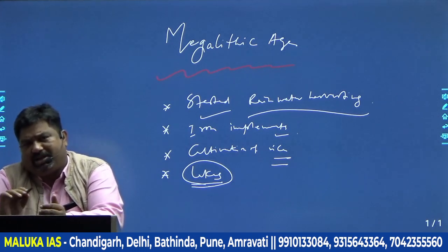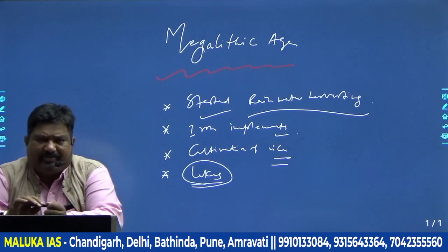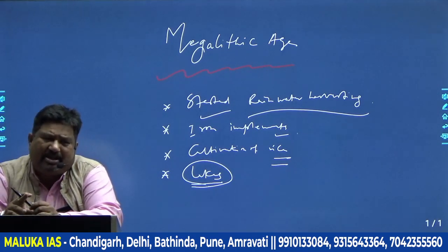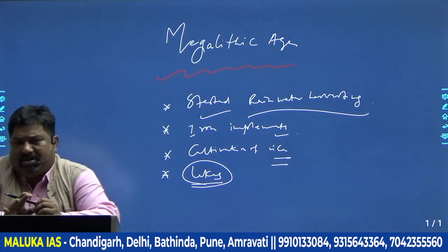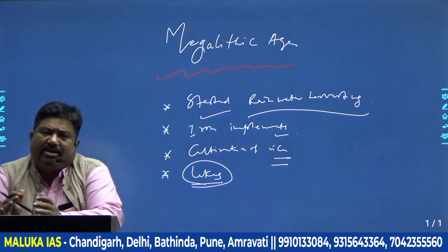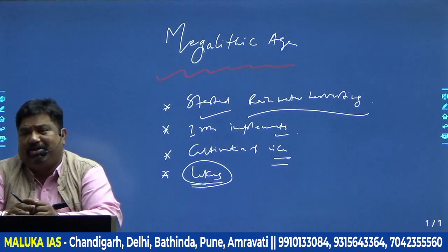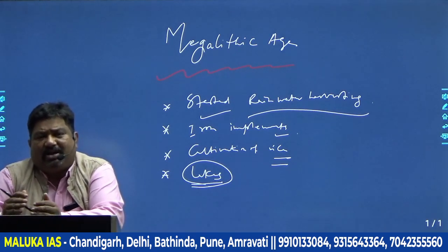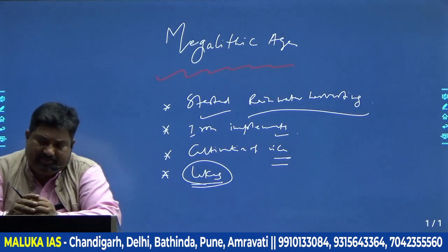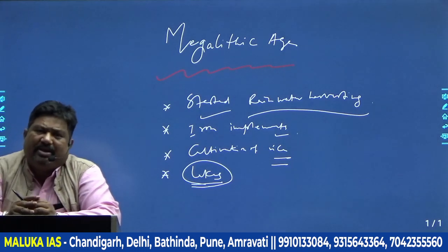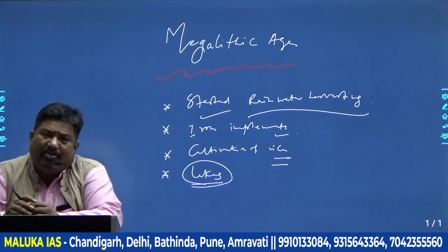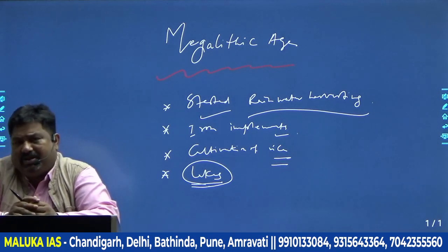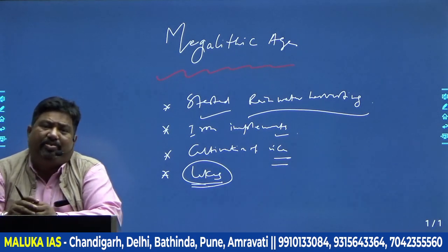Dolmens were not placed in agricultural areas, which is why they are still remaining in existence. Many people think these dolmens were the meditation places of monks because the structure is table-shaped. These features show that megalithic people were neither contemporaneous nor uniform in their civilizational story. Today some sites have been recovered from North India and Kashmir as well, so it cannot be called a limited South Indian phenomenon. There are many riddles yet to be solved.